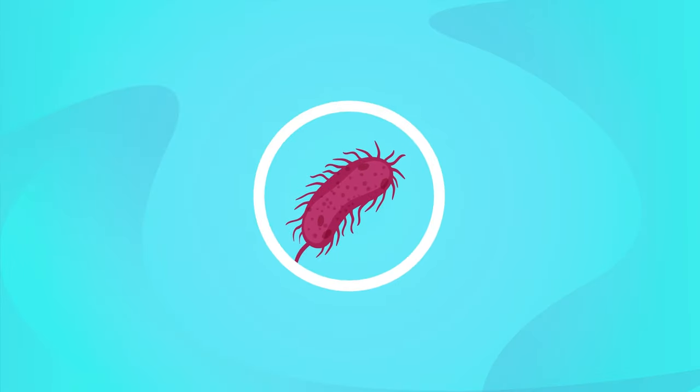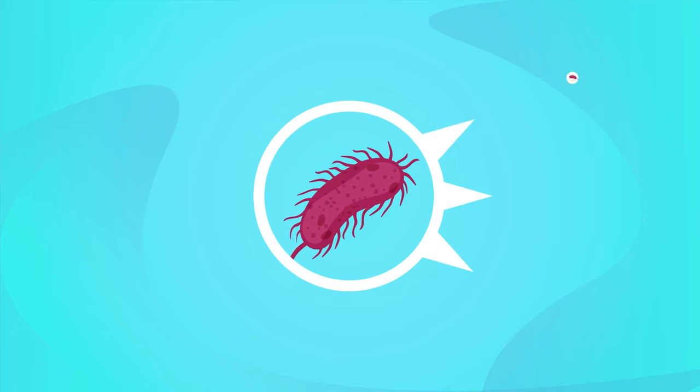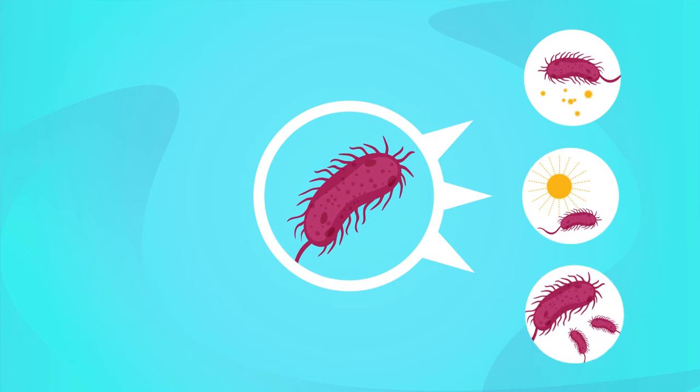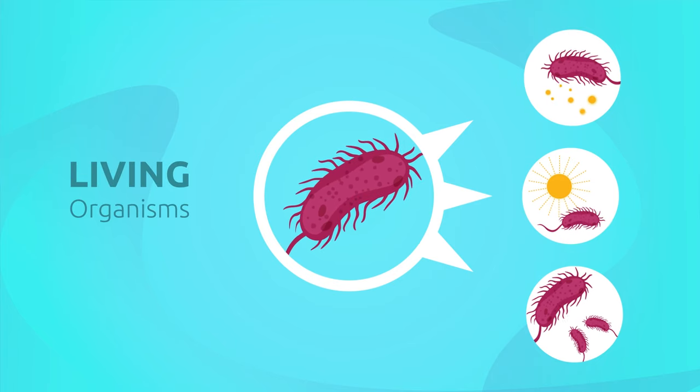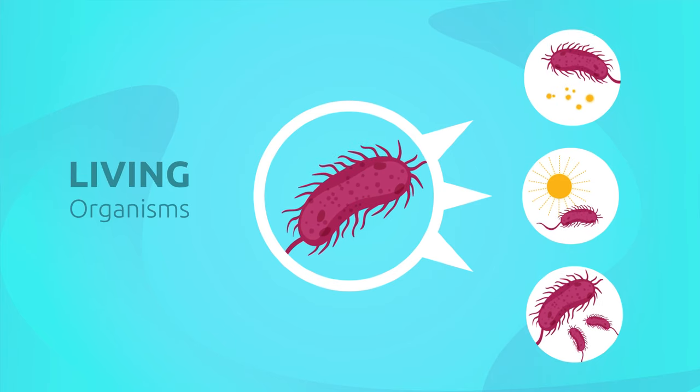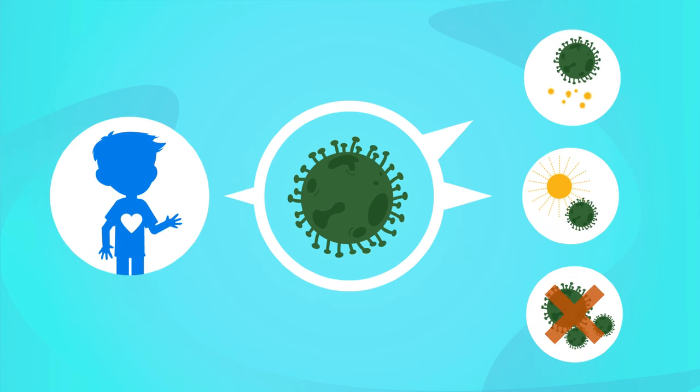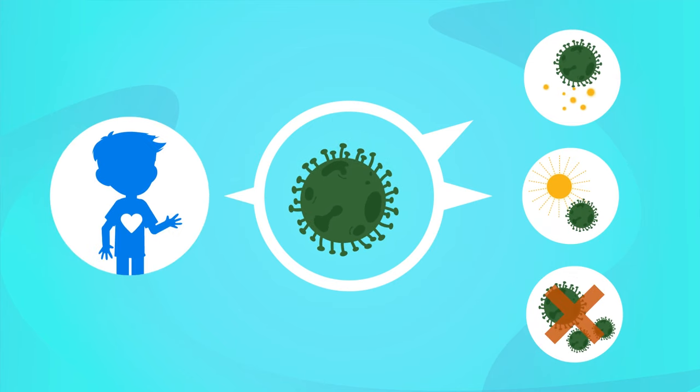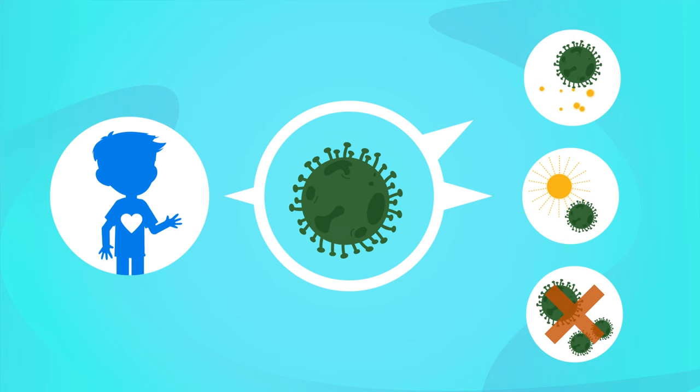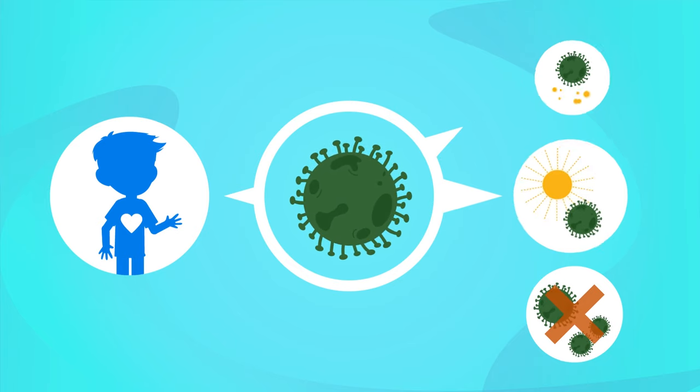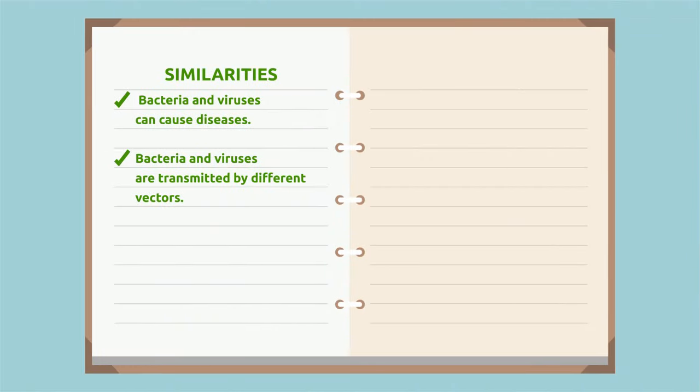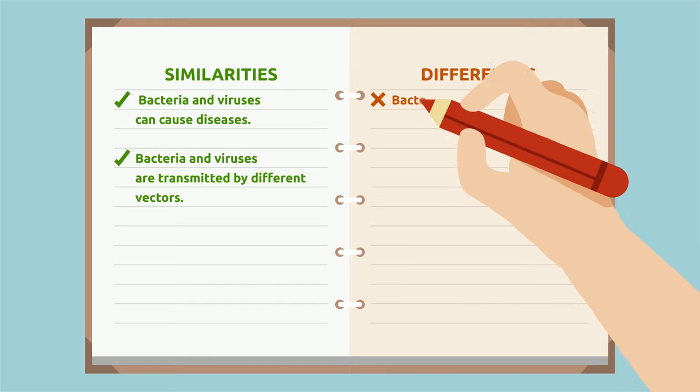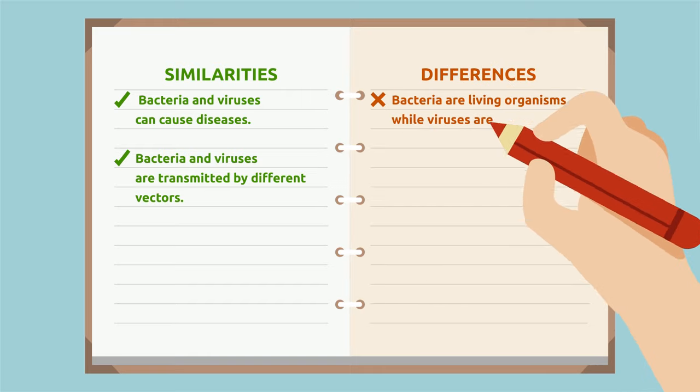Bacteria are prokaryotic cells that carry out the three vital functions of nutrition, interaction, and reproduction by themselves. That's why we regard them as living organisms. By contrast, viruses need a host to reproduce. They cannot carry out the three vital functions by themselves. That's why viruses are not considered to be alive. Let's note down the first difference: bacteria are living organisms while viruses are not.